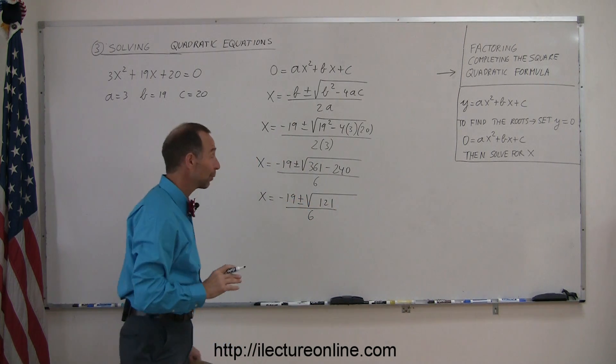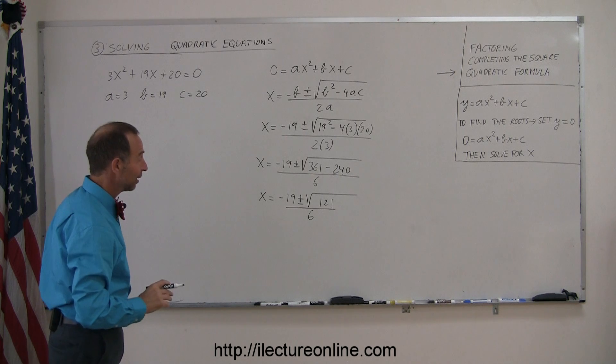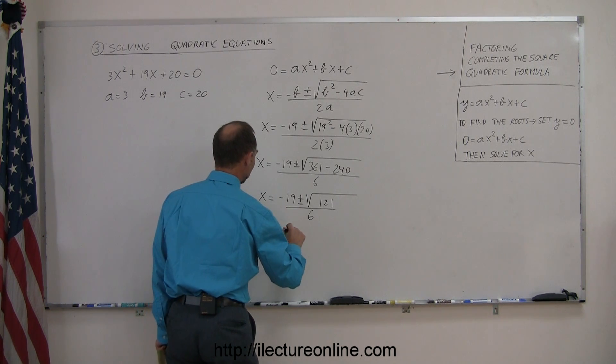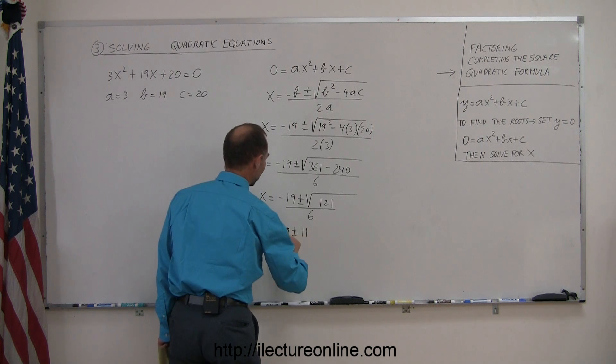And here we're kind of lucky, because 121 is a perfect square of 11, so this can be written as x is equal to minus 19, plus or minus 11 over 6.